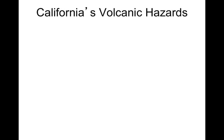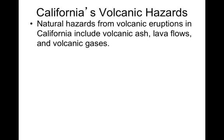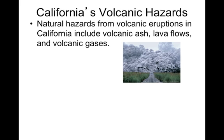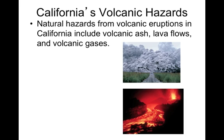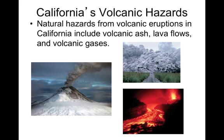We're going to move on to California's volcanic hazards. Natural hazards from volcanic eruptions in California include three things: the ash spewed out, the lava that flows, and the volcanic gases that are released. Volcanic ash is very hot and can burn trees, grass, and land, starting fires on its own — and it could be fatal to a person caught in it. If a volcano erupted in California, we'd have lava flowing. Gases emitted during an eruption can be poisonous and could definitely kill someone nearby.